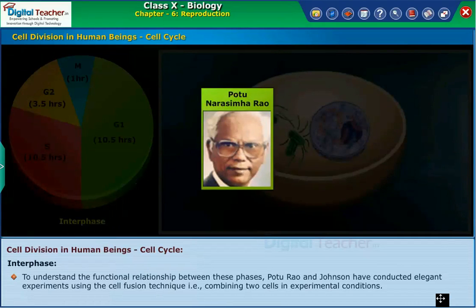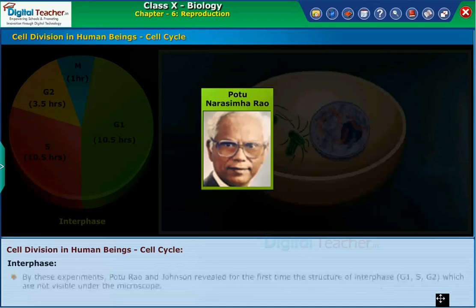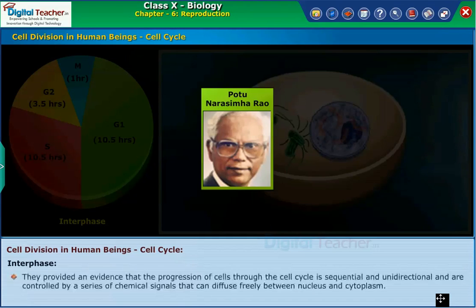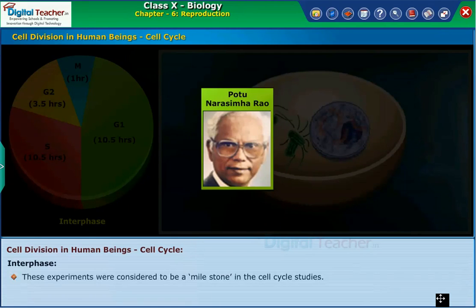To understand the functional relationship between these phases, Porto, Rao, and Johnson conducted elegant experiments using the cell fusion technique — that is, combining two cells under experimental conditions. By these experiments, they revealed for the first time the structure of interphase G1, S, and G2, which are not visible under the microscope. They provided evidence that the progression of cells through the cell cycle is sequential and unidirectional, controlled by a series of chemical signals that can diffuse freely between the nucleus and cytoplasm. These experiments were considered a milestone in cell cycle studies.